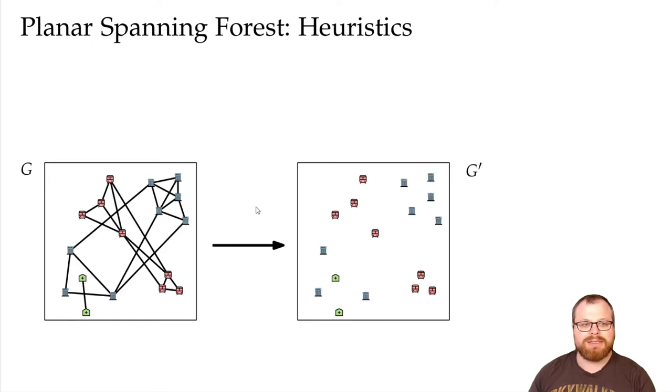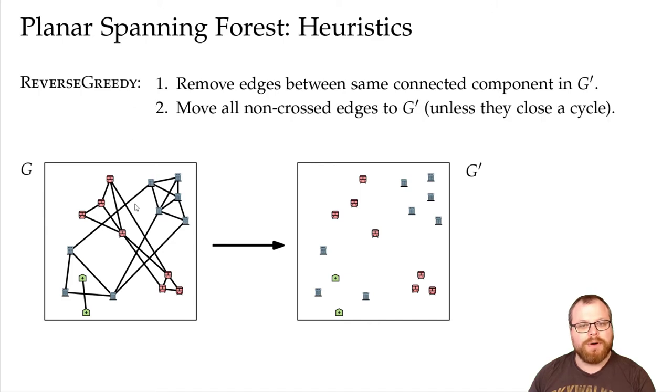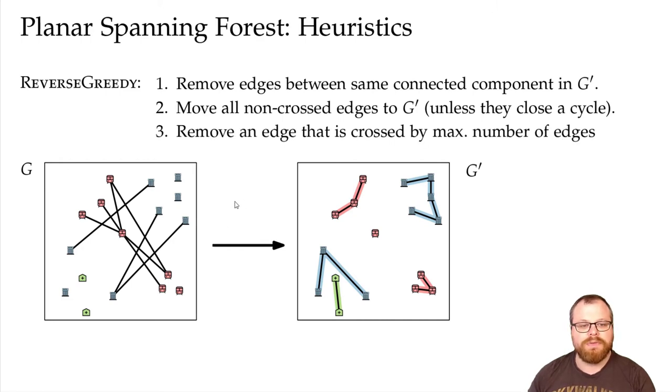The second heuristic is the so-called reverse greedy. In the beginning these two algorithms do exactly the same. But at some point when we only have crossed edges, instead of picking the edge with the fewest number of crossings, we remove the edge with the largest number of crossings. Now we again have planar edges that we can move.